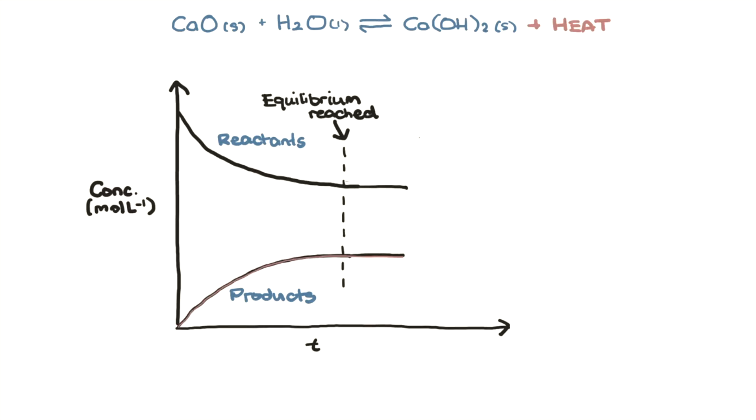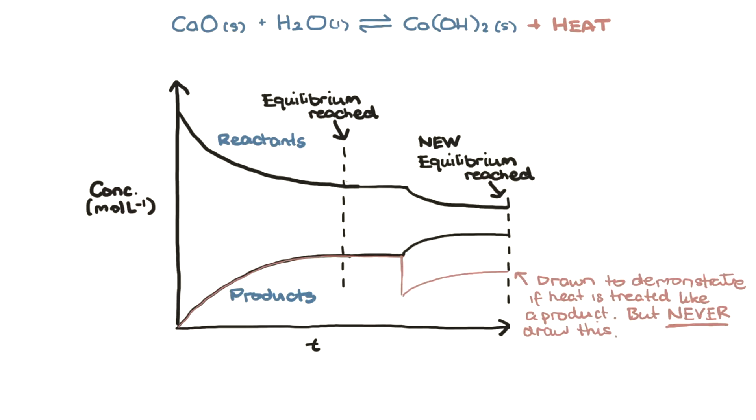At equilibrium, concentrations of species are constant. So if heat has to be released, but you take away that heat, the forward reaction is favored so heat can be produced.